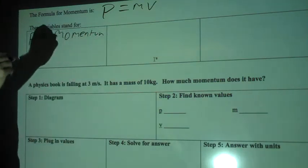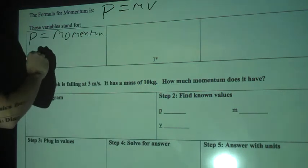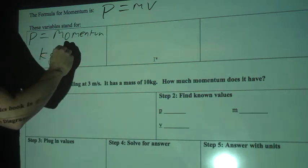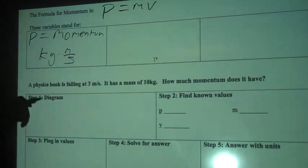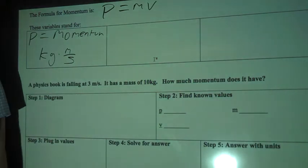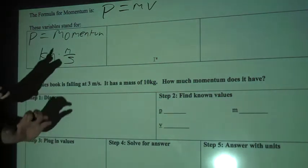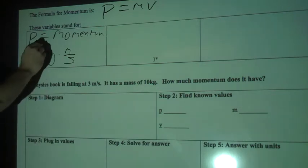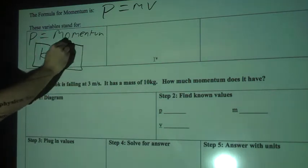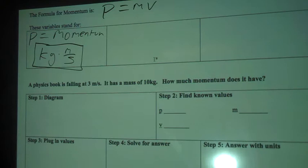And it's measured in kilogram meters per second. This is one of the first formulas you have where it's not something neat like joules or newtons or meters per second. It's measured in kilogram meters per second, kilogram times meters per second.